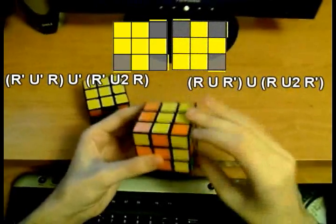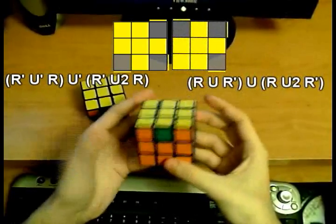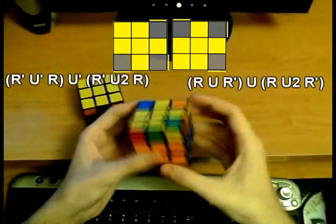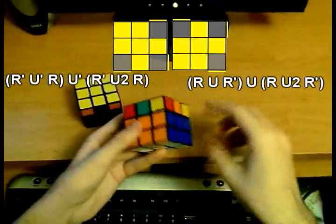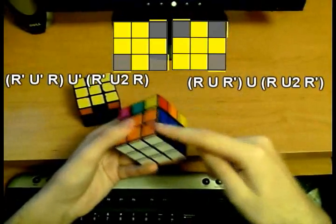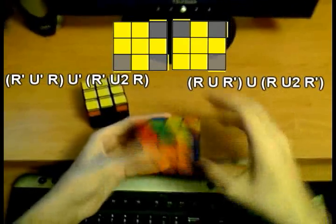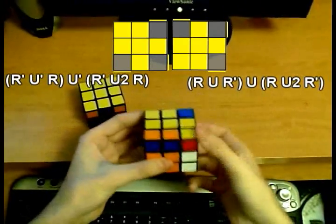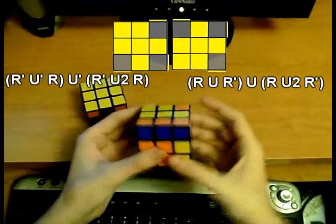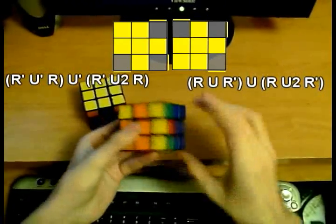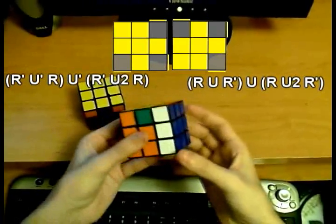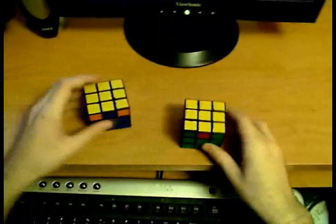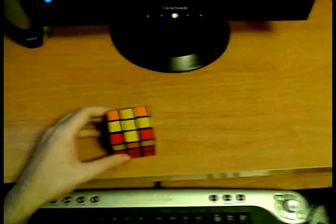And then just a quick note on memorization—that's why I reversed that case. To memorize this, it's very easy: just track this F2L pair around the cube. Notice what happens to it as I do the algorithm. First, I take it out so it's here, then I move it one position over, then I open the slot again, and I insert it back. And that's the sune algorithm.